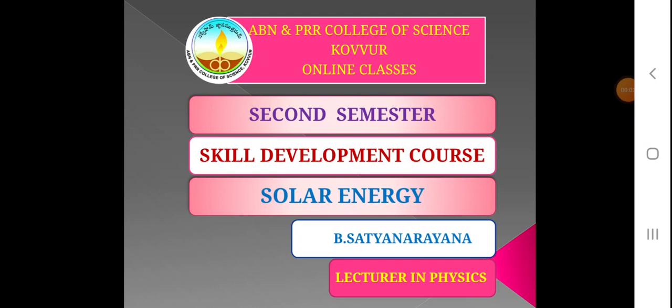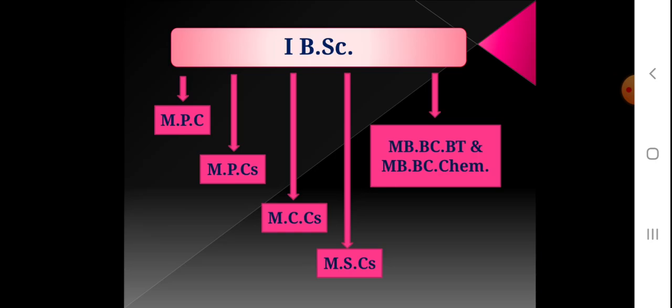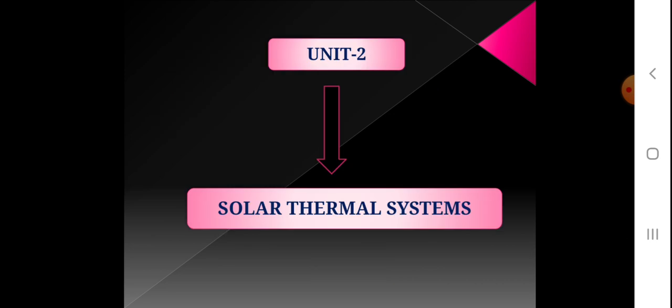Dear students, welcome to online classes, ABN and PRR College of Science. This is a second semester Skill Development course on Solar Energy. This is B. Sachinana. This is common for all first B.Sc. students. We are in Unit 2. The title of Unit 2 is Solar Thermal Systems. This is lecture number 11.